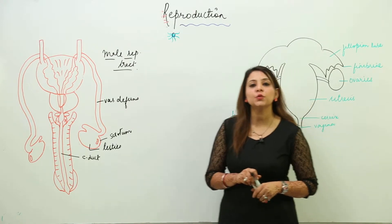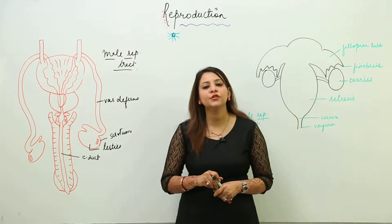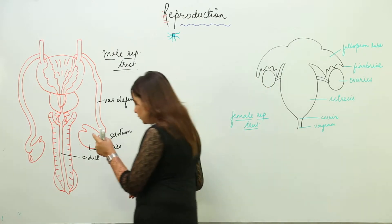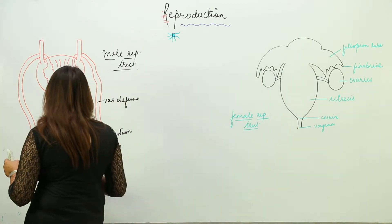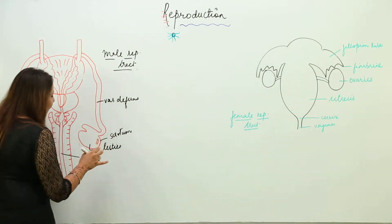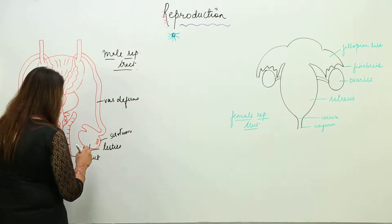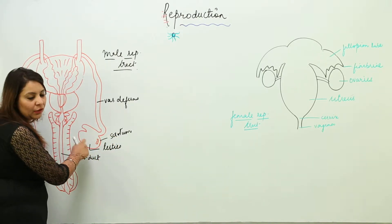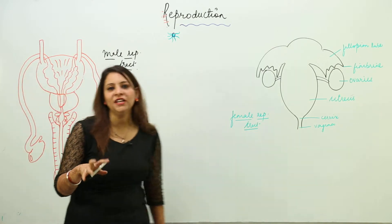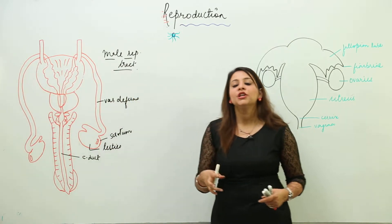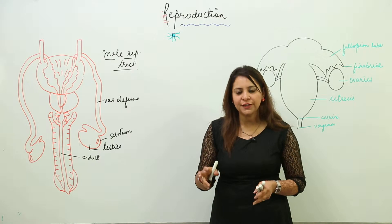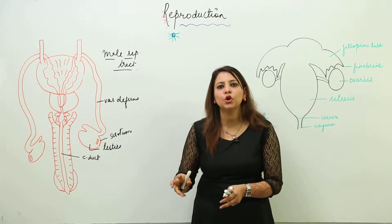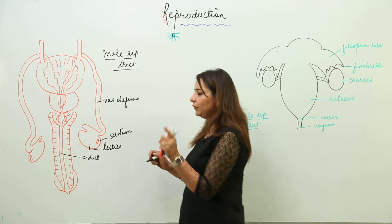We are going to start with the reproductive tract of man and woman. The male reproductive organ is the testes — there is a pair of testes present in a male. When a child is developing in a mother's womb, during the sixth month of gestation period, the testes descend into a sac-like structure called the scrotum.